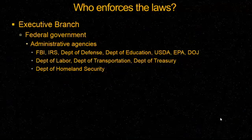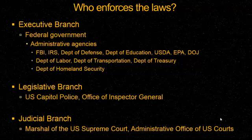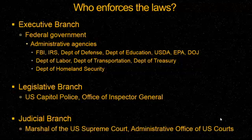Who enforces the law depends on where we are. At the federal level, you can have agencies such as the FBI, IRS, defense, education, health departments, and justice departments. Through the legislative branch, there are specific enforcement bodies like the postal inspector and the Capitol Police, which are controlled directly by Congress. The judicial branch also has enforcement officials within certain court systems. Over the past 25 to 30 years as things have become more dangerous, we've seen metal detectors and bag searches installed at courthouses. But most enforcement comes out of the executive branch.